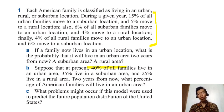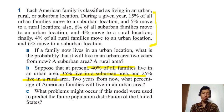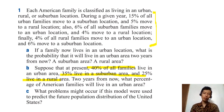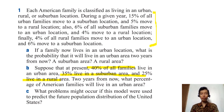Point B says that if at present 40 percent of all families have this distribution, it asks what the distribution will look like two years from now — what percentage of American families will live in an urban area. Point C asks what problem might occur if you use this model in the real world to predict future population distribution. I'll give you a pause as usual to read and understand all the information.